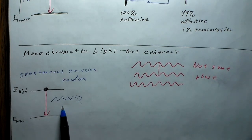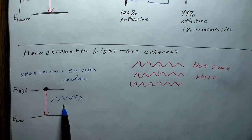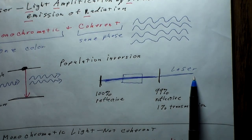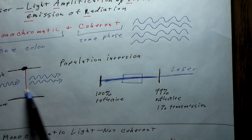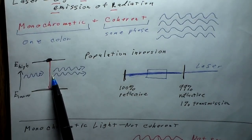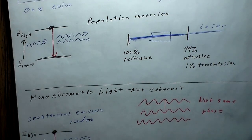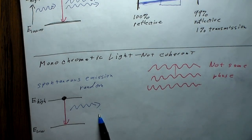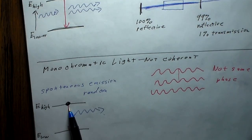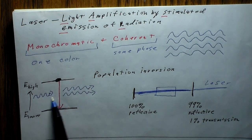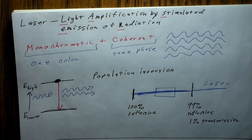Spontaneous emission occurs in devices like LEDs (light-emitting diodes), which have no lasing capability. There's always some spontaneous emission present. The key difference between spontaneous and stimulated emission is the lifetime of the excited states — a very short lifetime leads to monochromatic spontaneous emission dominating, while a very long lifetime in the upper state allows stimulated emission to dominate, producing laser action.